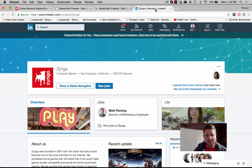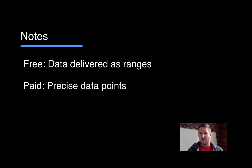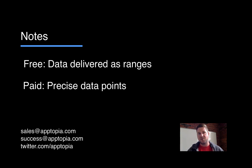A couple of quick notes: you may have noticed our data is shown in ranges. The reason it's in ranges is that this gives us the ability to offer it for free. If you are a paying customer, you should get precise estimates upon logging into your Apptopia account. If not, just contact your customer success manager or email success@apptopia.com.